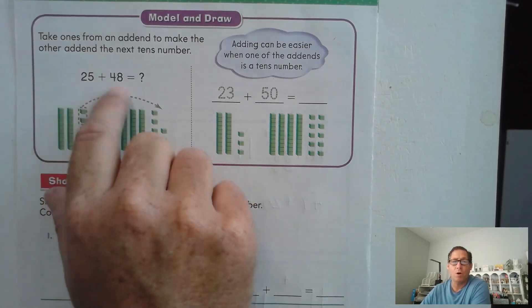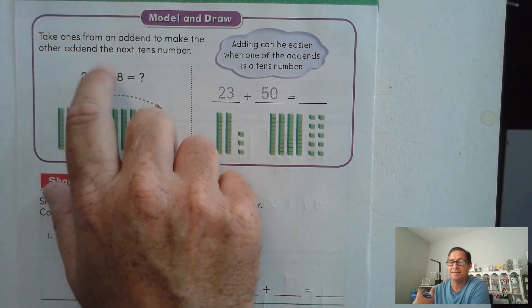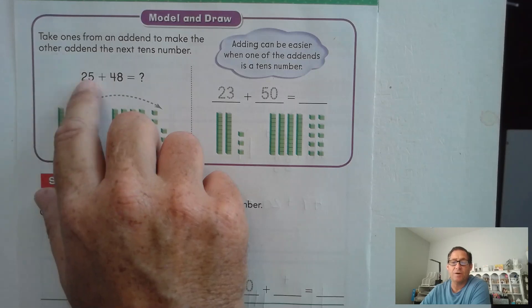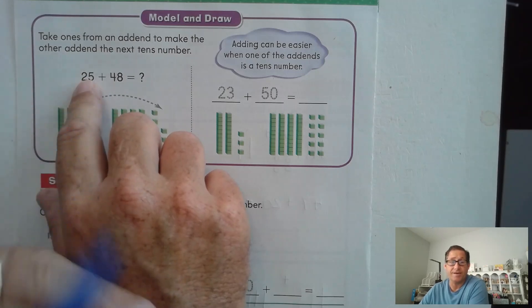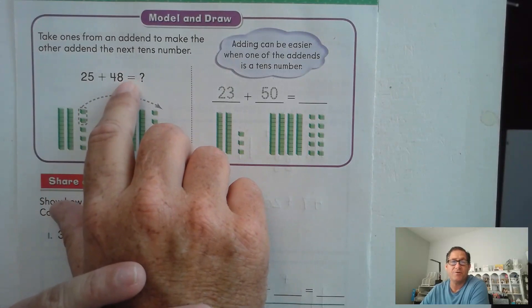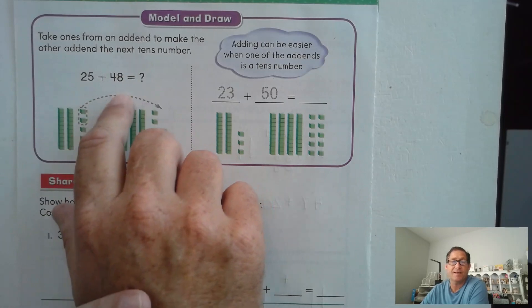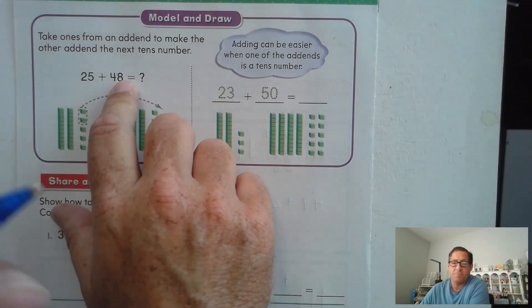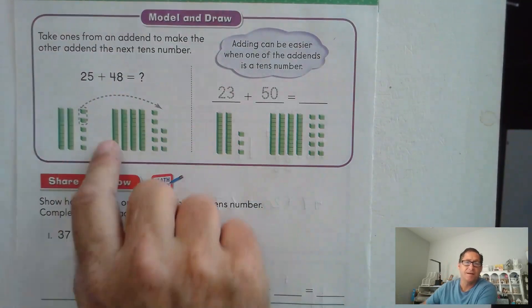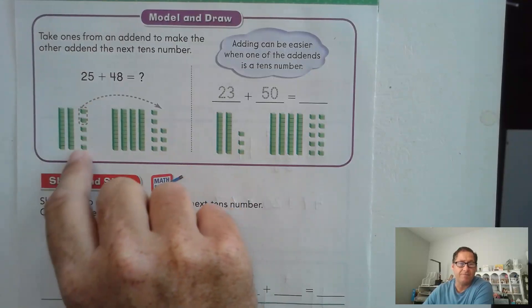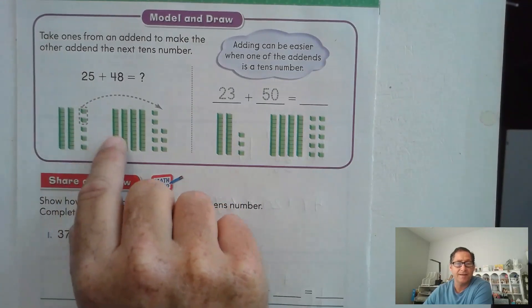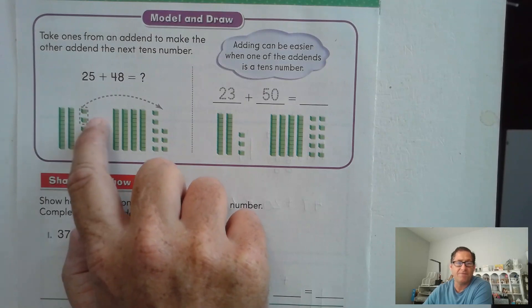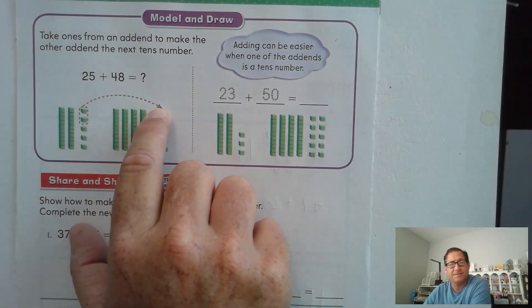Well, we're going to take ones from one of the addends to make the other addend the next 10s number. So I could look at the 25 and say, how much do I have to add to 25 to make the next 10, which is 30? Or I can look at 48 and say, how many do I have to add to 48 to get the next 10, which is 50? Now I typically would say add to the larger addend, the one that's closer to the next 10, but it doesn't matter. It's your choice. So that's what they did here though. They took the 25.